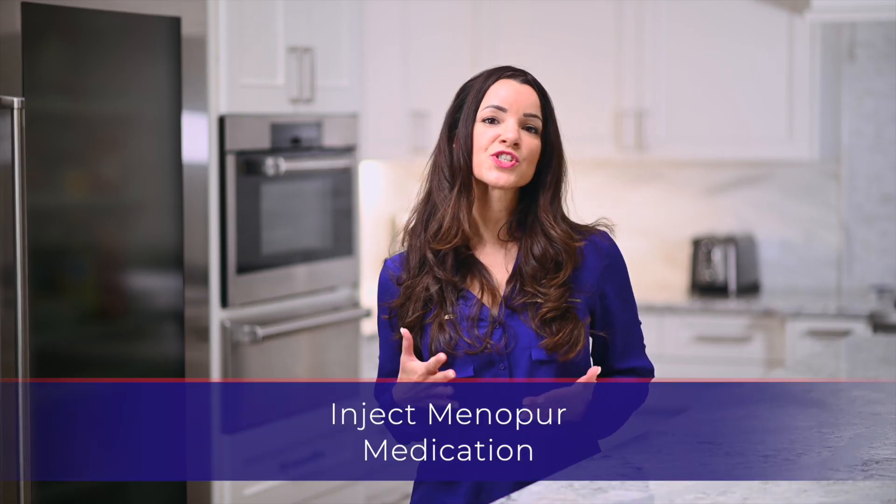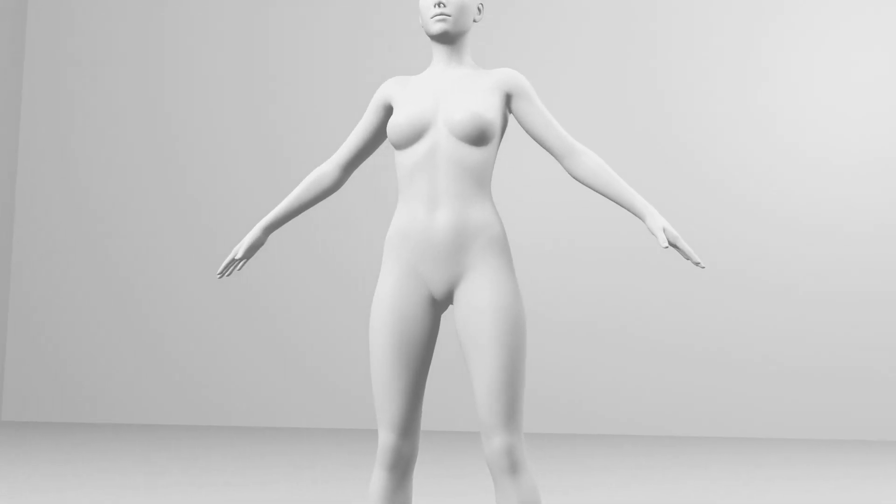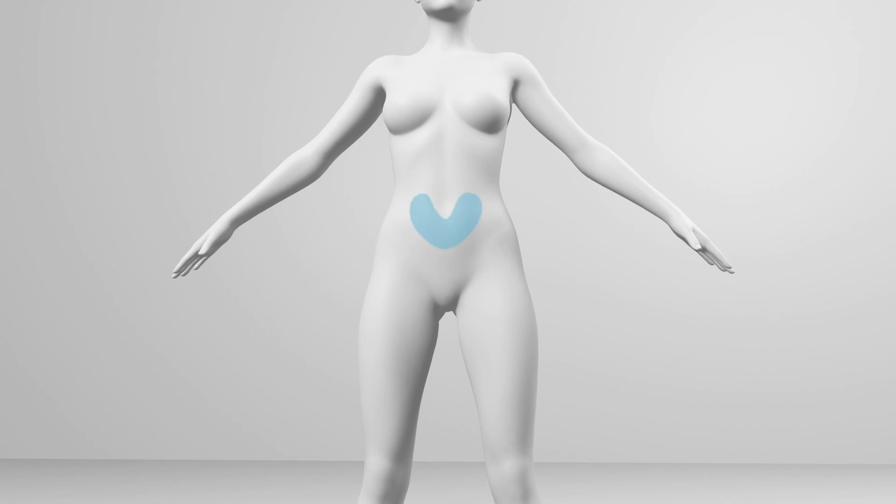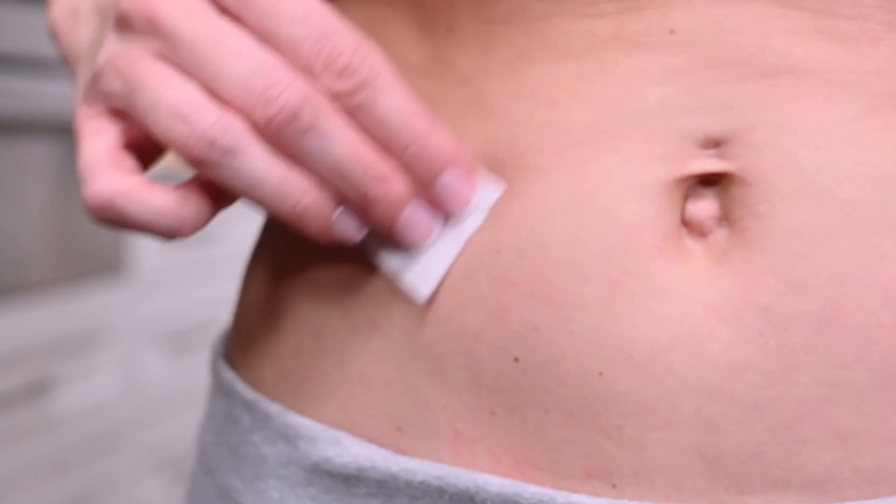The injection is administered in a subcutaneous site specified by your physician. The most convenient site for a subcutaneous injection is in the abdomen around the navel. If your physician has specified that you are to administer this injection differently, for example intramuscularly, please proceed as directed by your doctor or nurse. Wipe the injection site with an alcohol prep wipe and allow the skin to dry. Make sure to alternate the injection sites between both sides of your body.